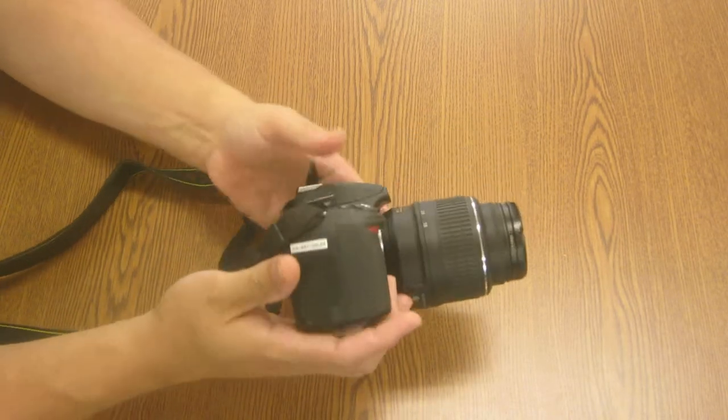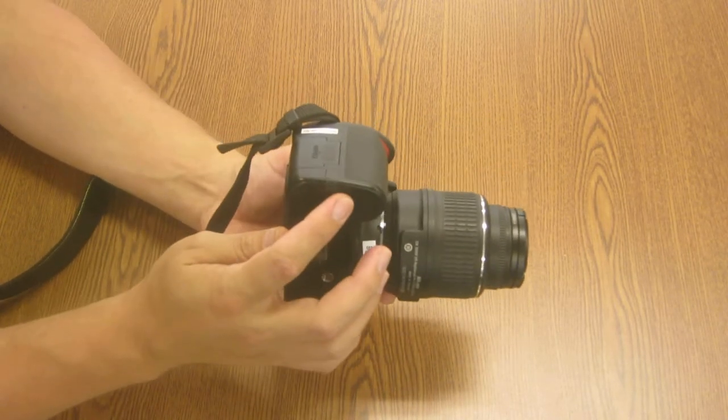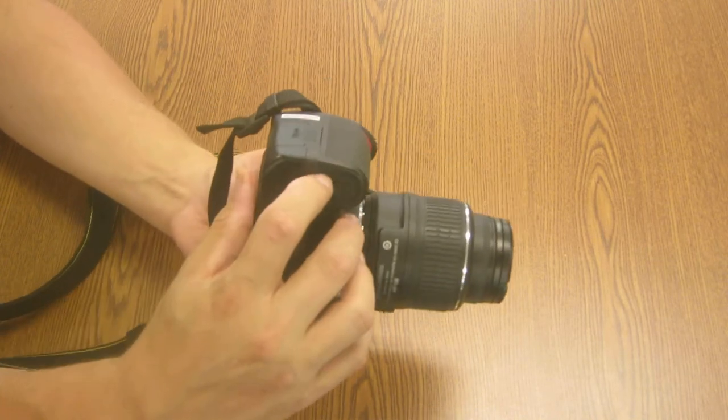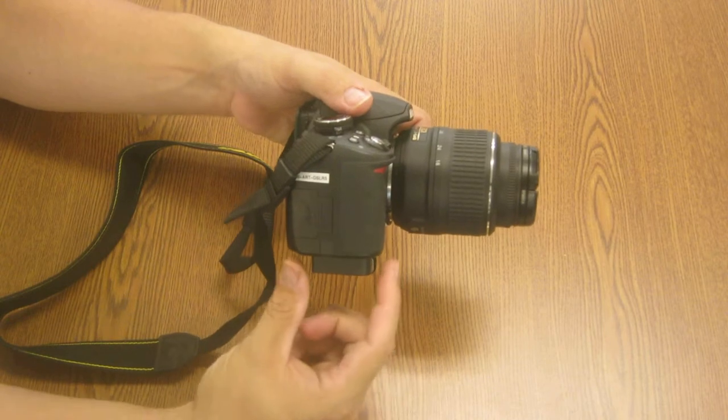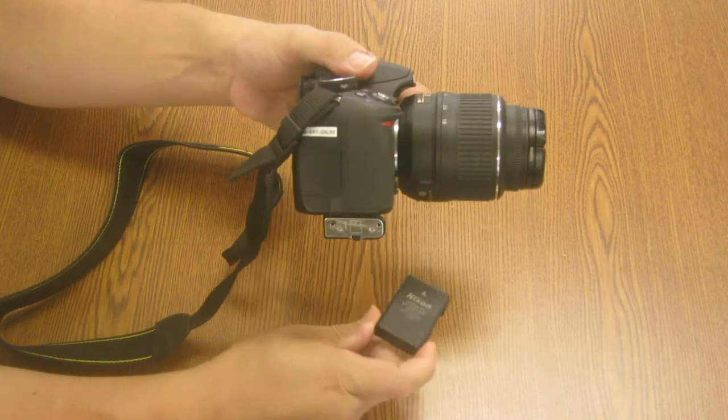For the battery, you're going to flip the camera over. You have this little trap door here, and you're going to simply open that up, turn the battery, it'll start to slide up. You just pull that battery out.